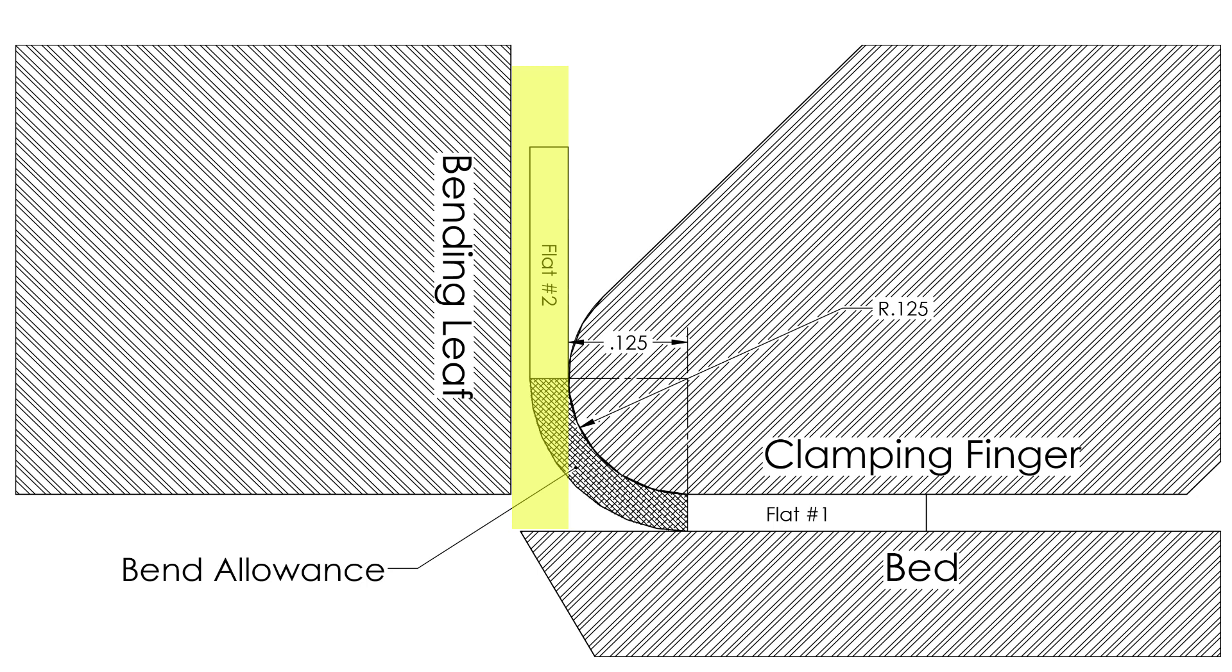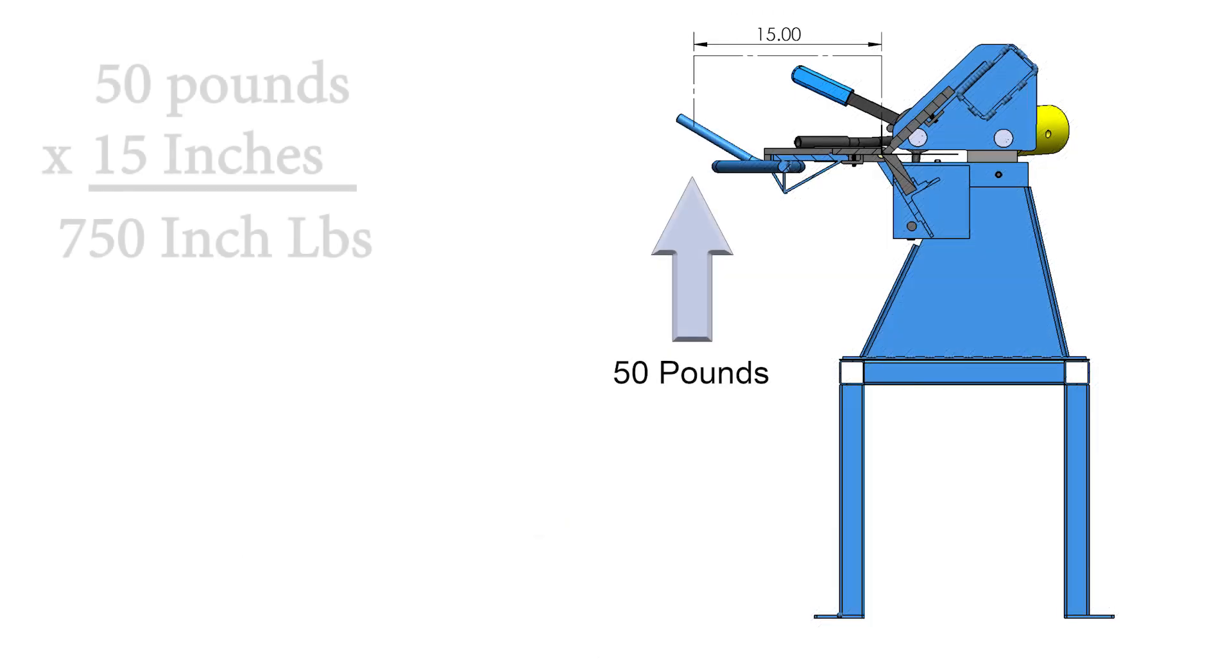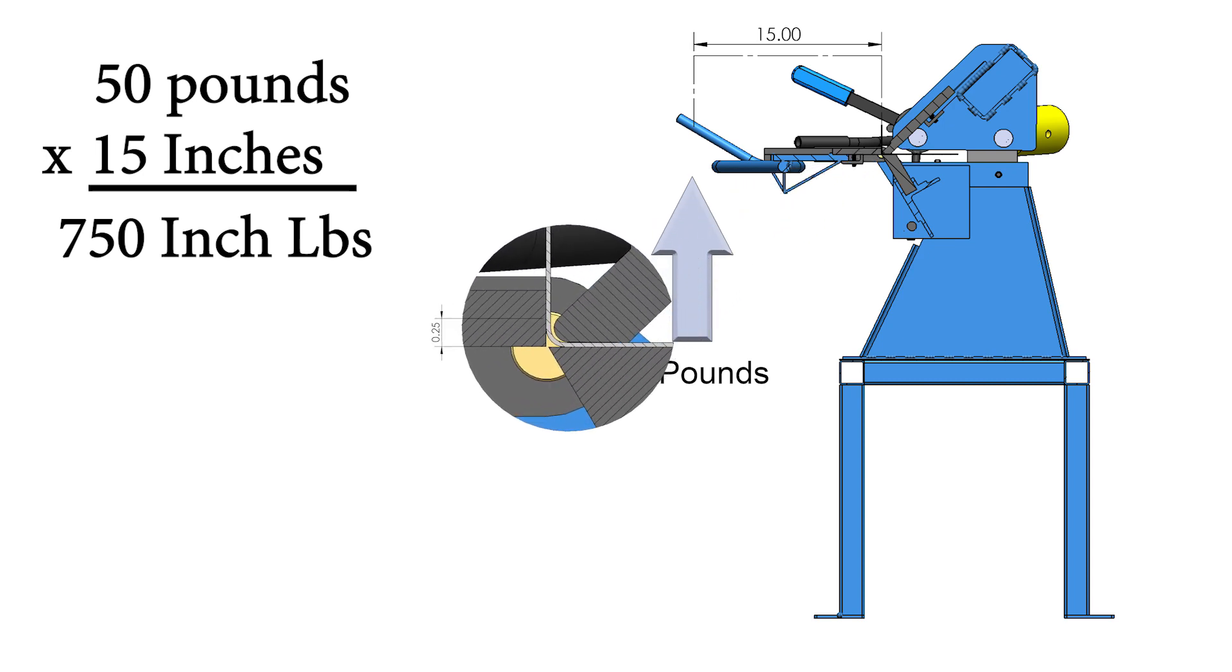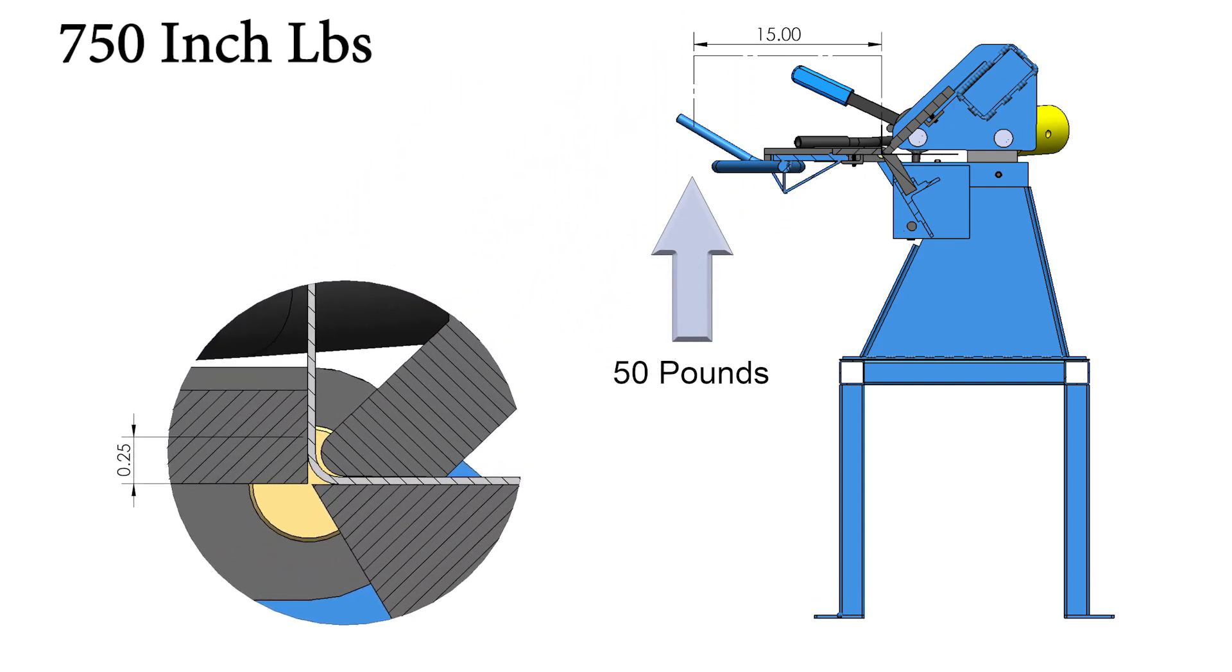Think about this: if you're applying 50 pounds of force on a 15-inch handle, the bending leaf that is making contact with the sheet metal is only one quarter inch away from the bending axis.